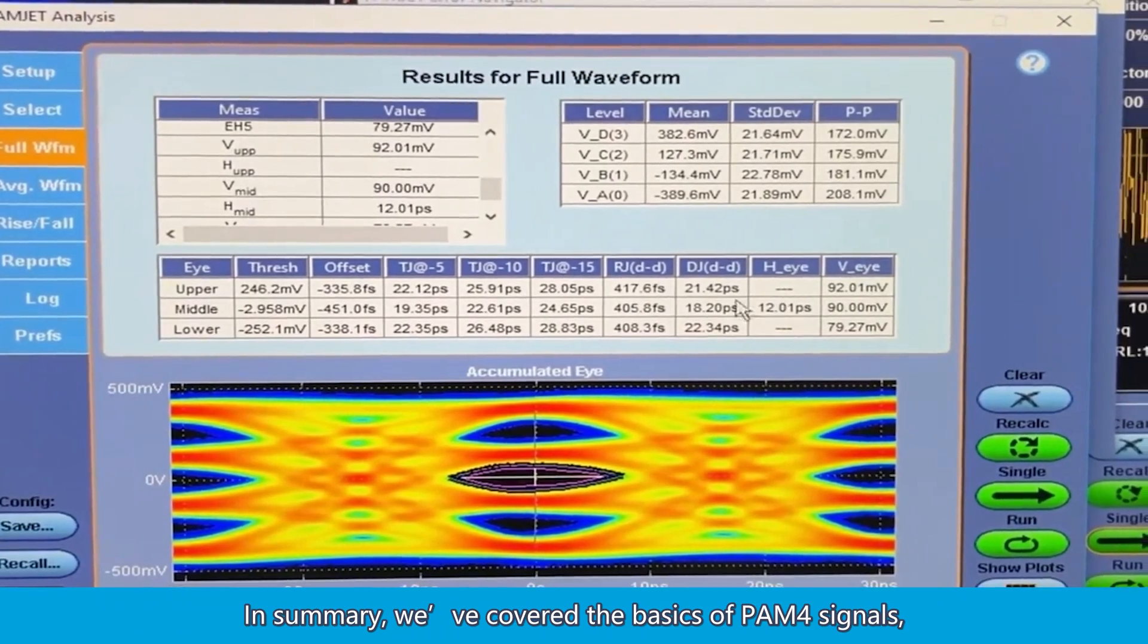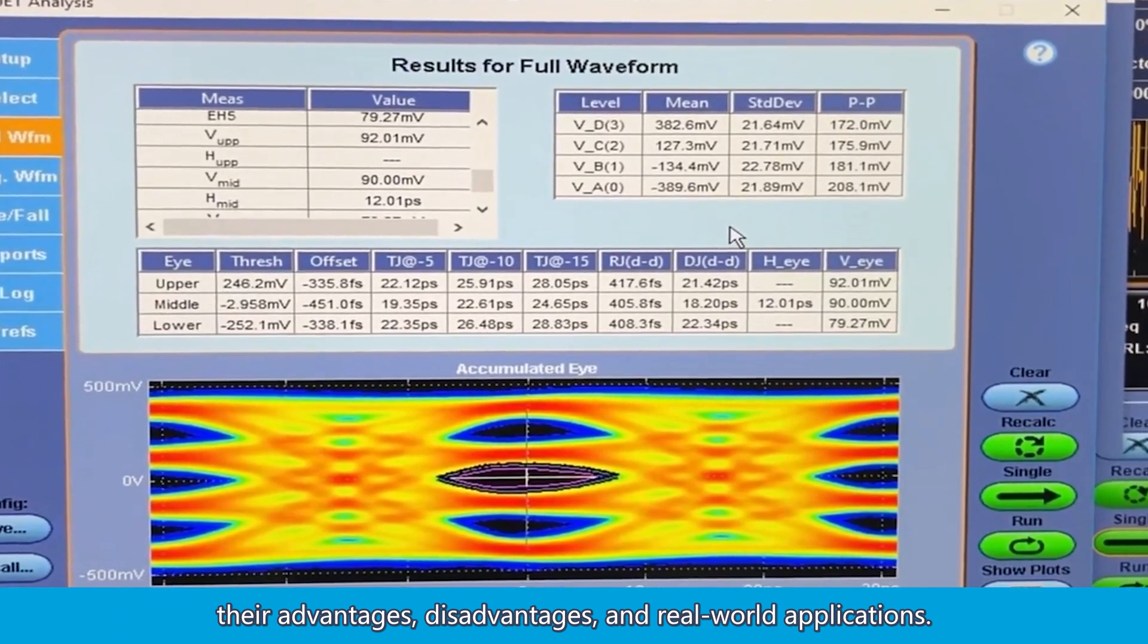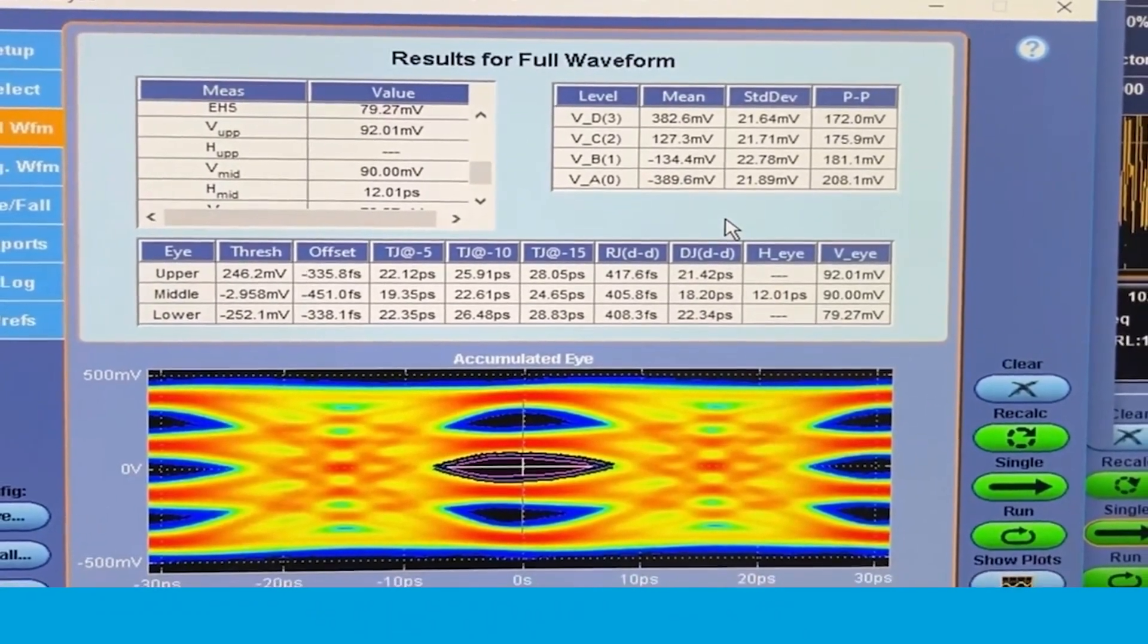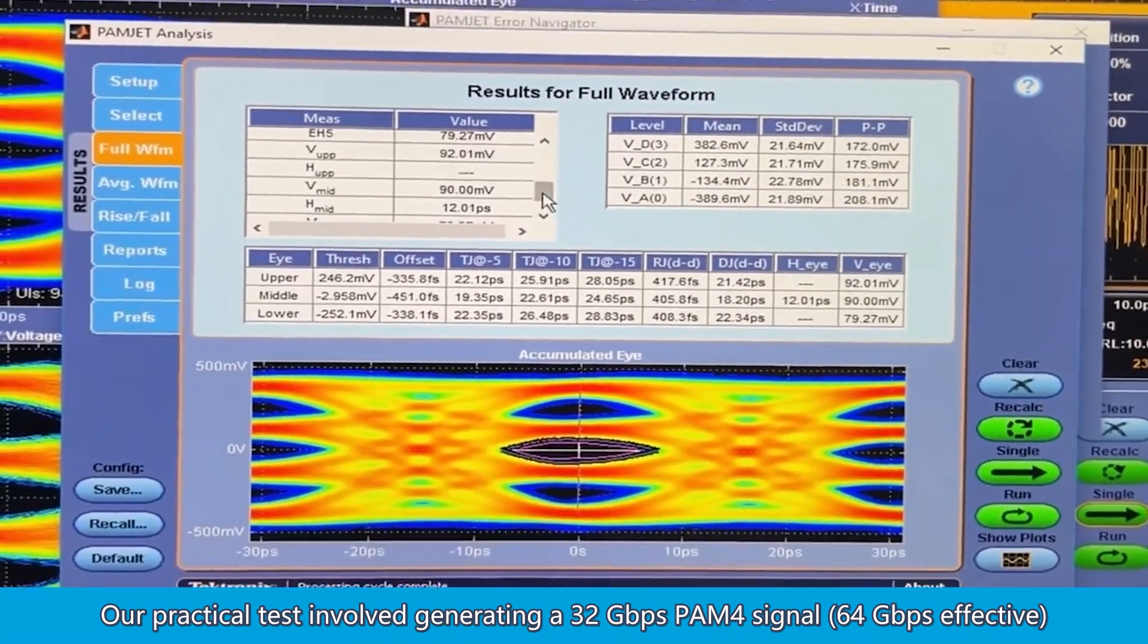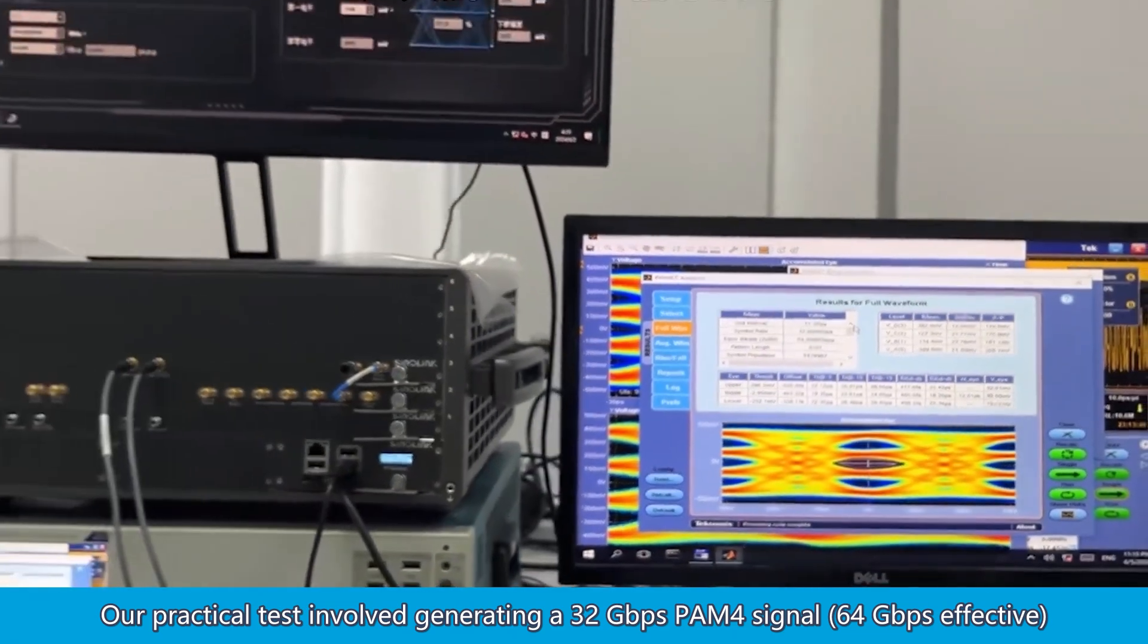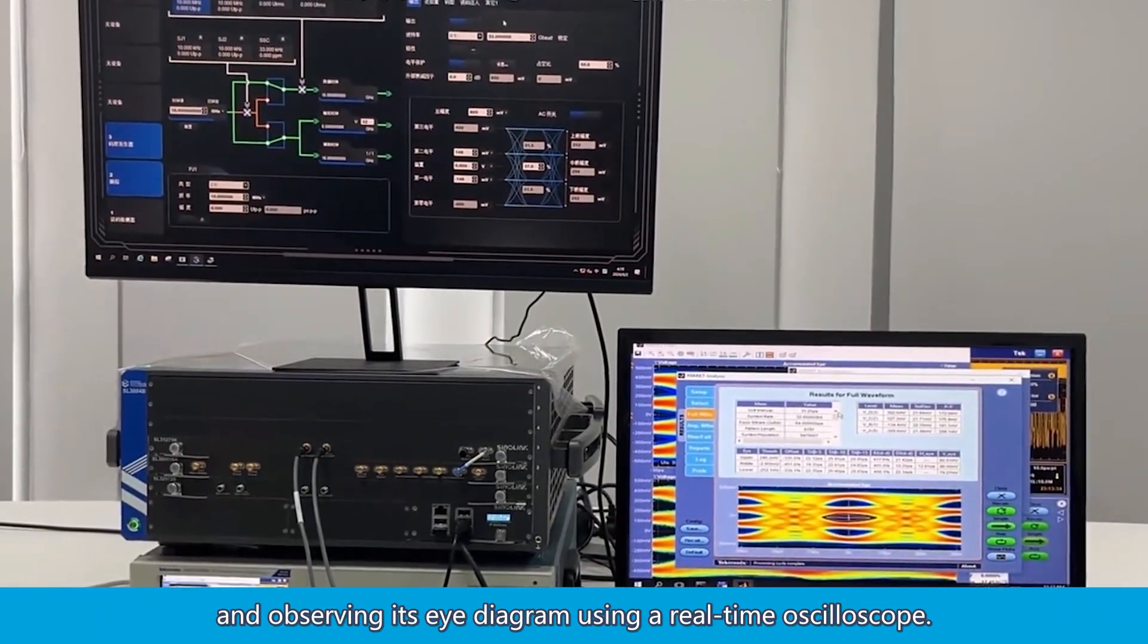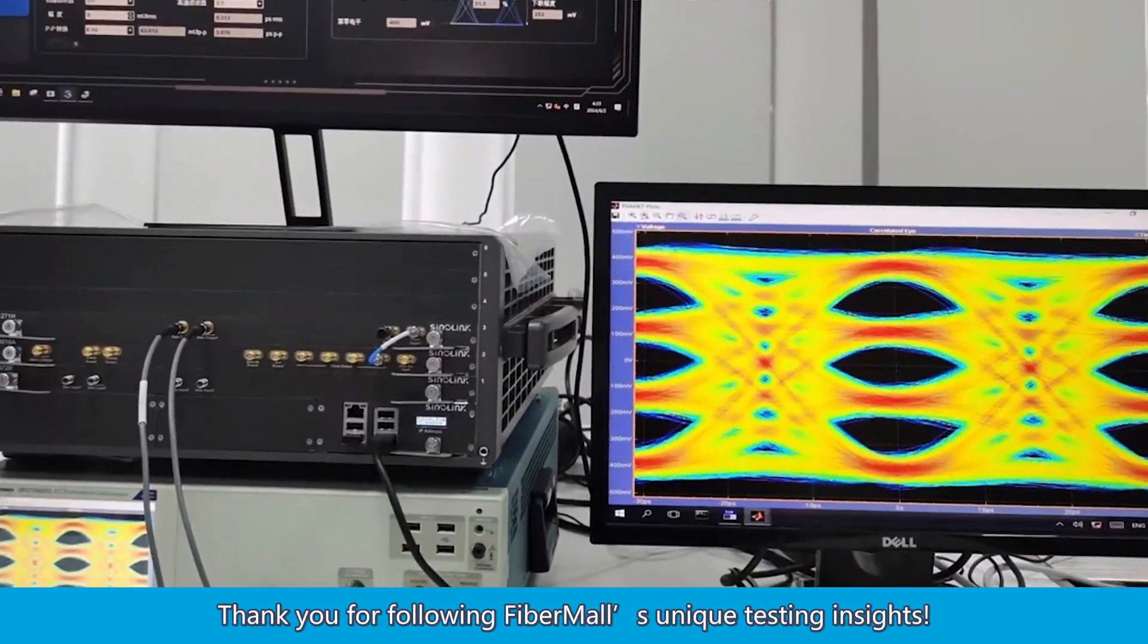In summary, we've covered the basics of PAM-4 signals, their advantages, disadvantages, and real-world applications. Our practical test involved generating a 32 gigabits per second PAM-4 signal, 64 gigabits per second effective, and observing its eye diagram using a real-time oscilloscope. Thank you for following FiberMall's unique testing insights.